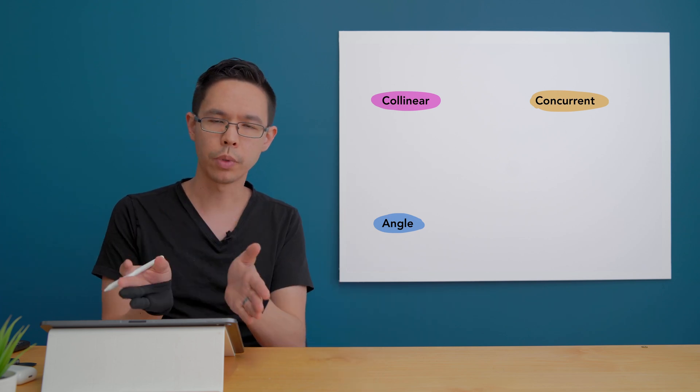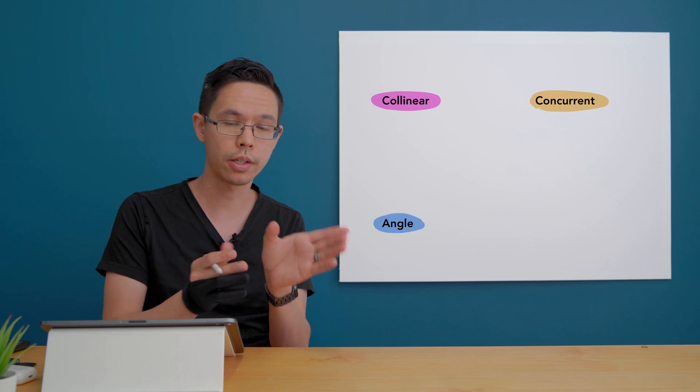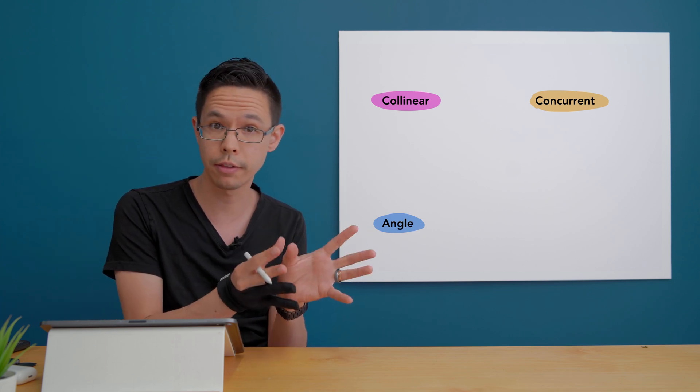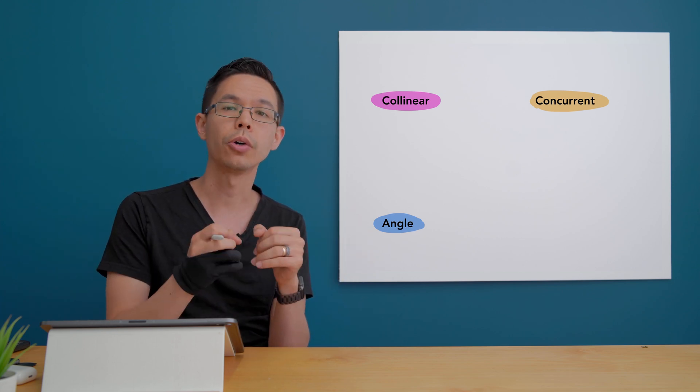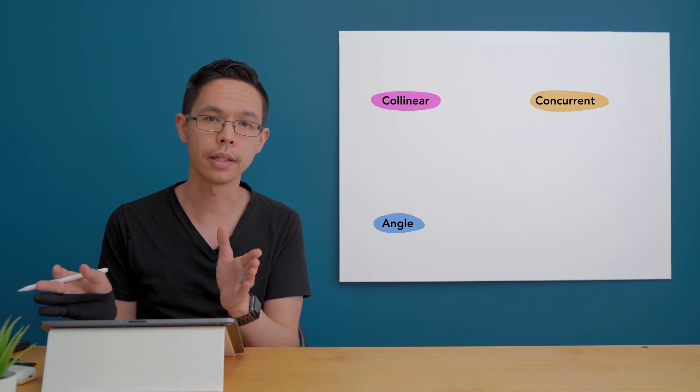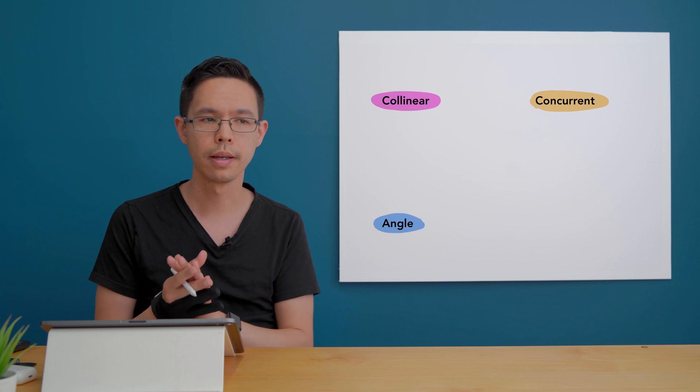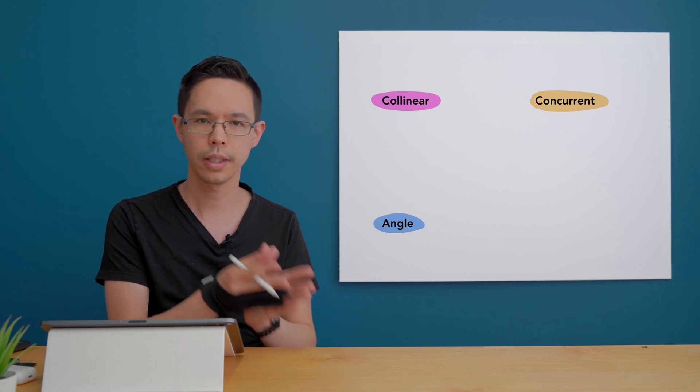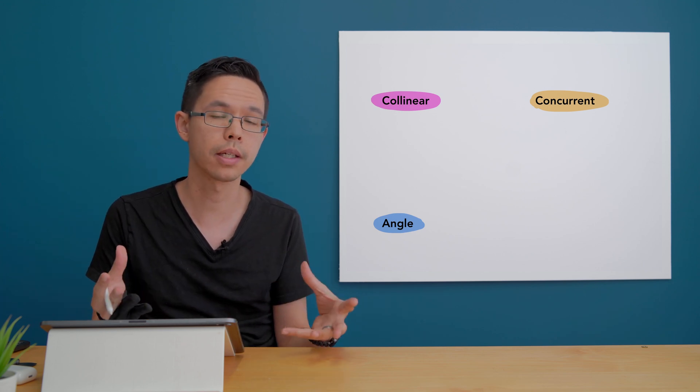If we break the meaning of the word into two parts we can see it's got the first prefix, the start of the word is co. Co means together. And the last part of its name, linear, means a straight line. So together in a straight line.